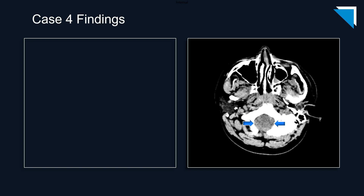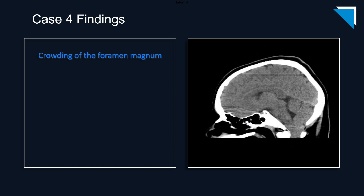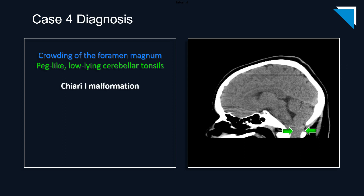There is soft tissue prominence and crowding in the foramen magnum. The cause is nicely demonstrated on the sagittal image: there are low-lying, peg-like cerebellar tonsils. This is a patient with Chiari 1 malformation.